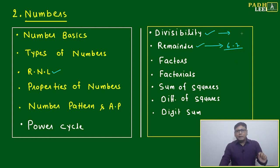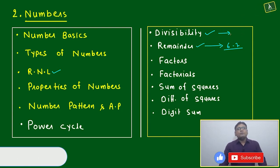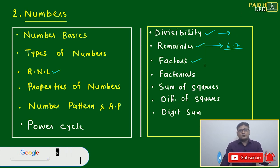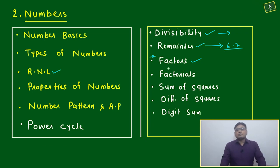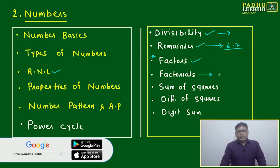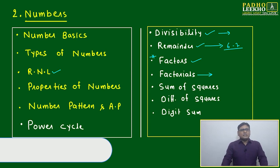Divisibility theorems, remainder theorem, factors, factorials, sum of squares, difference of squares, and digit sum are the other major subtopics. If at any point of time you want to revise, just note down all these subtopics and you can recall all the concepts related to them. Remainder theorem goes in depth - there are six to seven theorems for different types of scenarios and questions. Factors and the reverse of factors have plenty of scope for higher level questions.